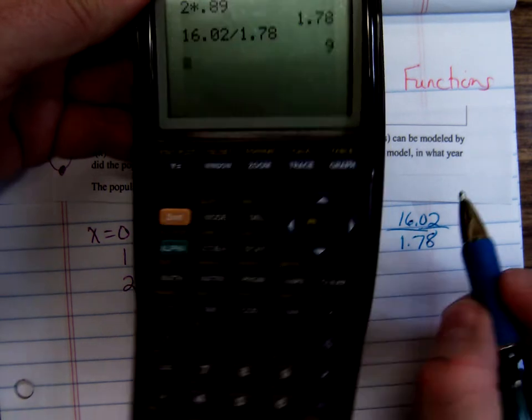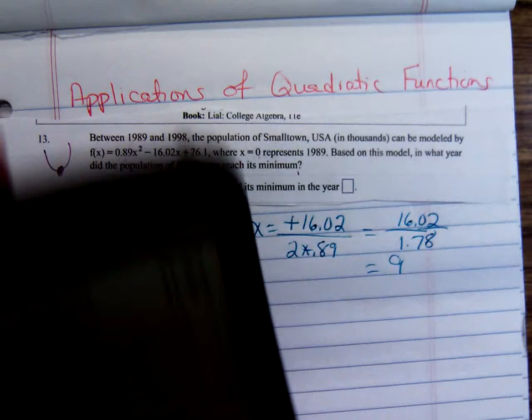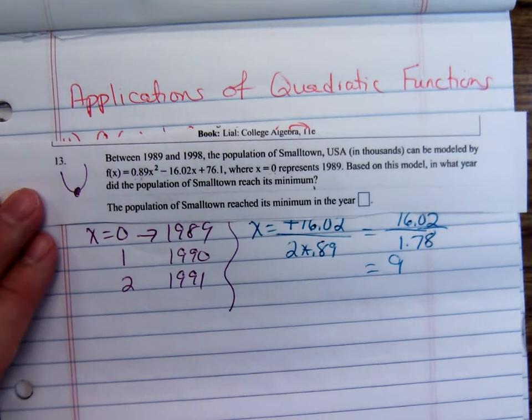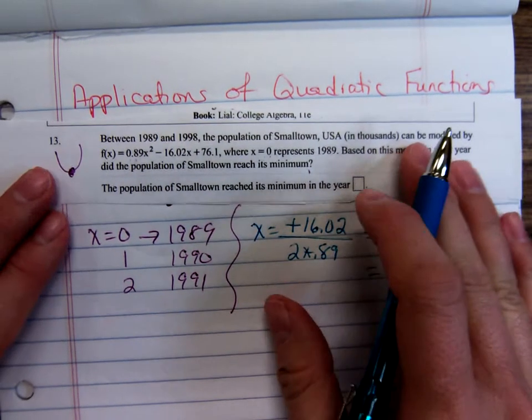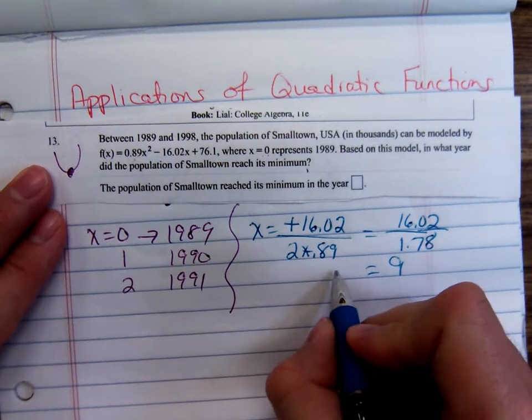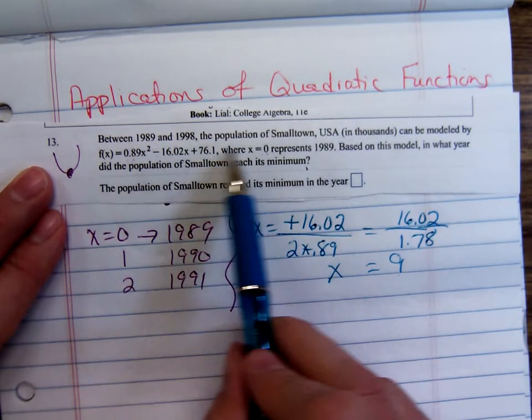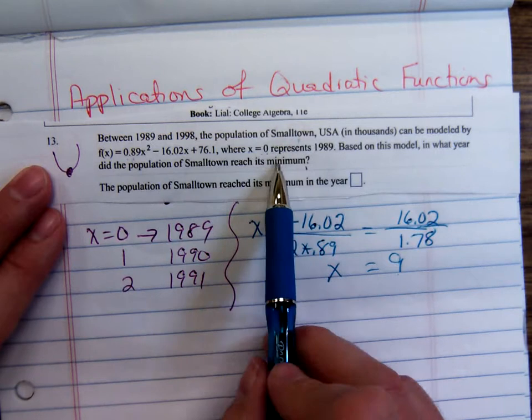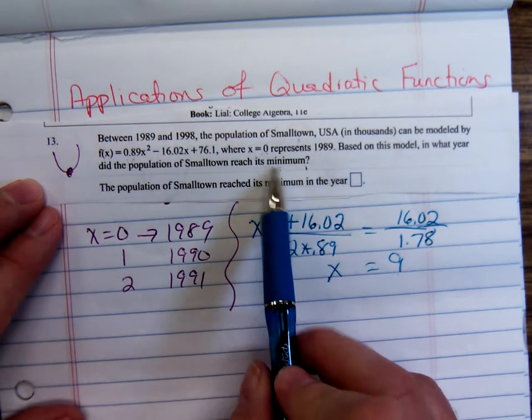That's a 9. So when x is 9, that's when the population of this little town reached its smallest, reached its minimum.